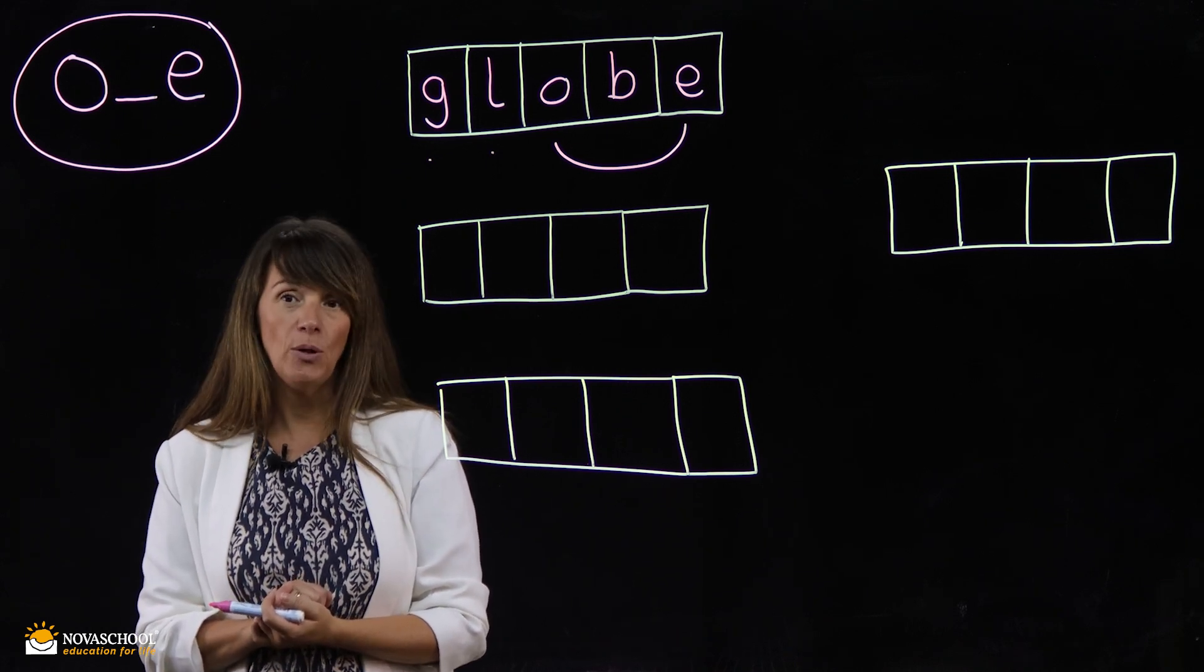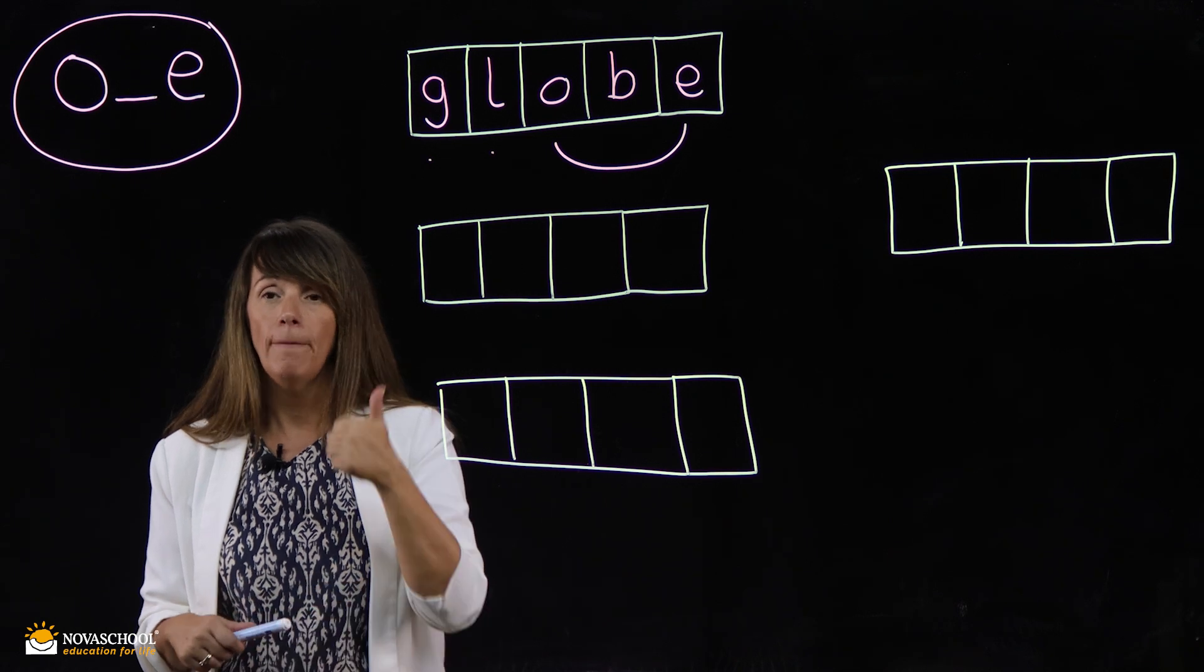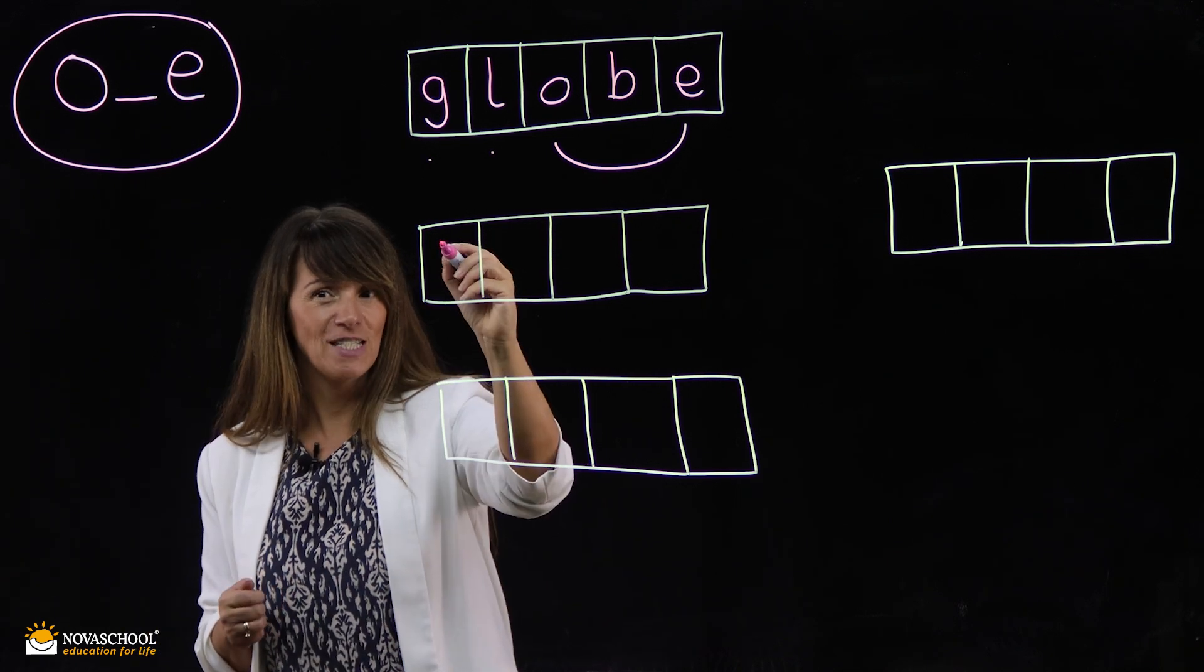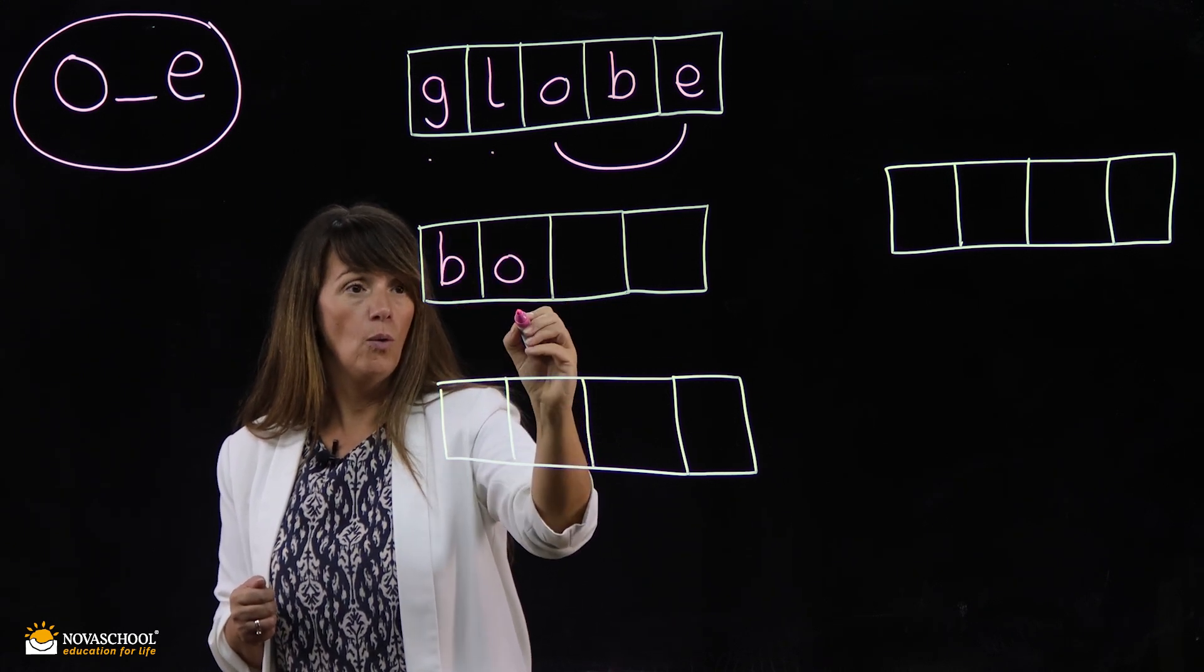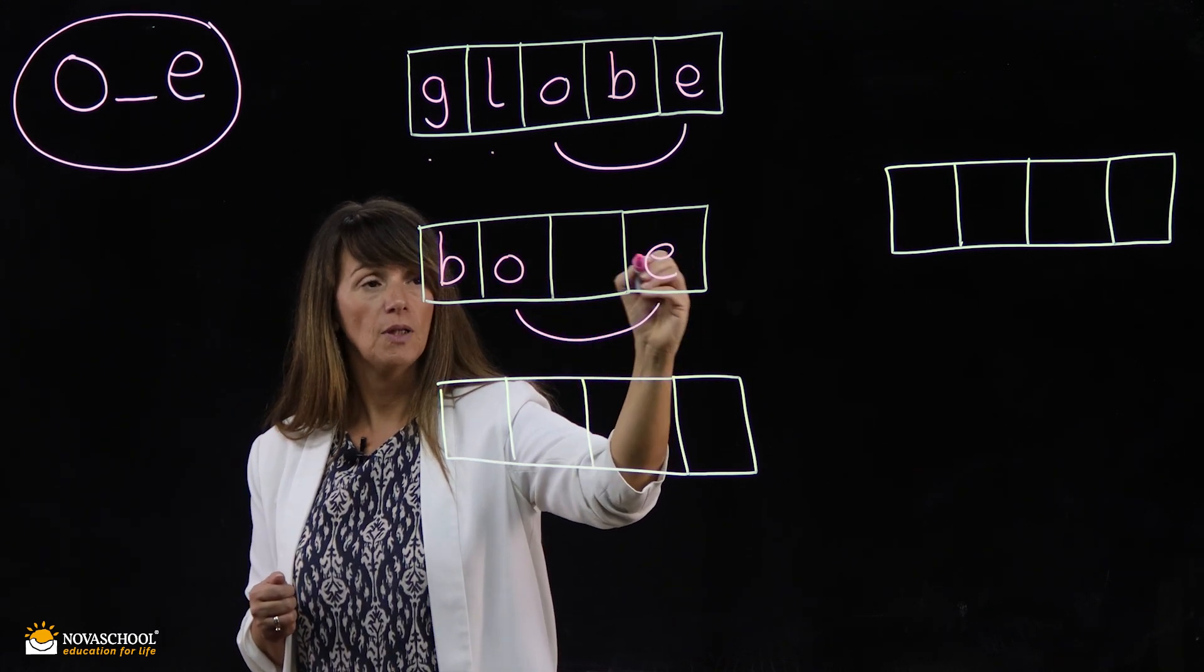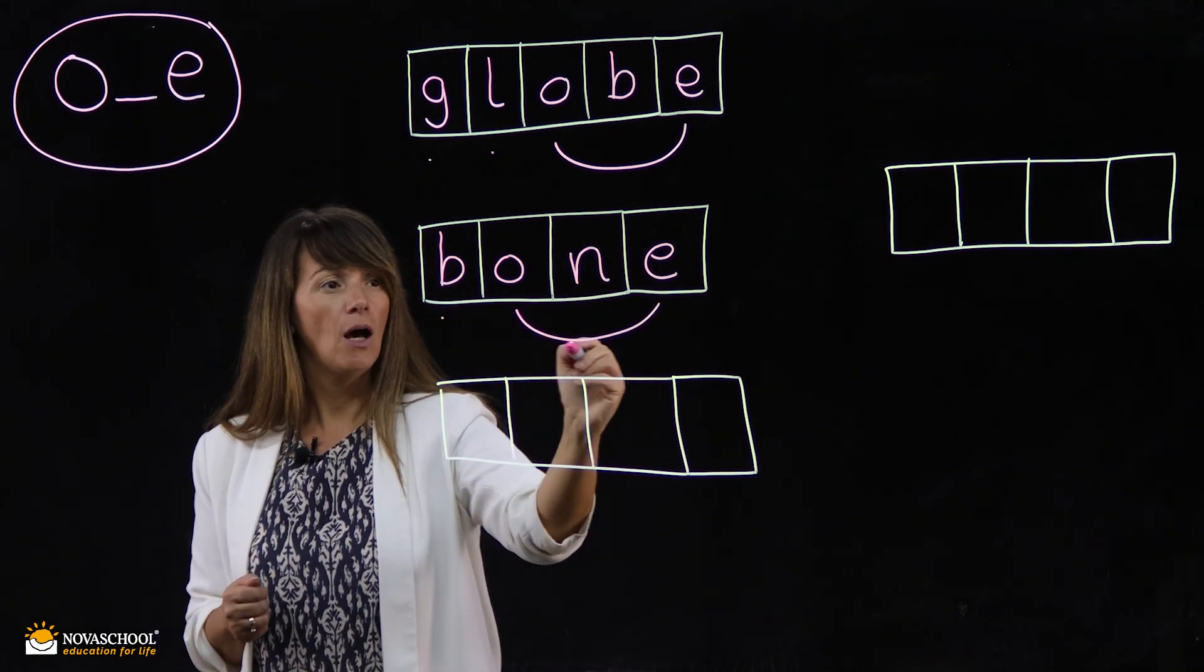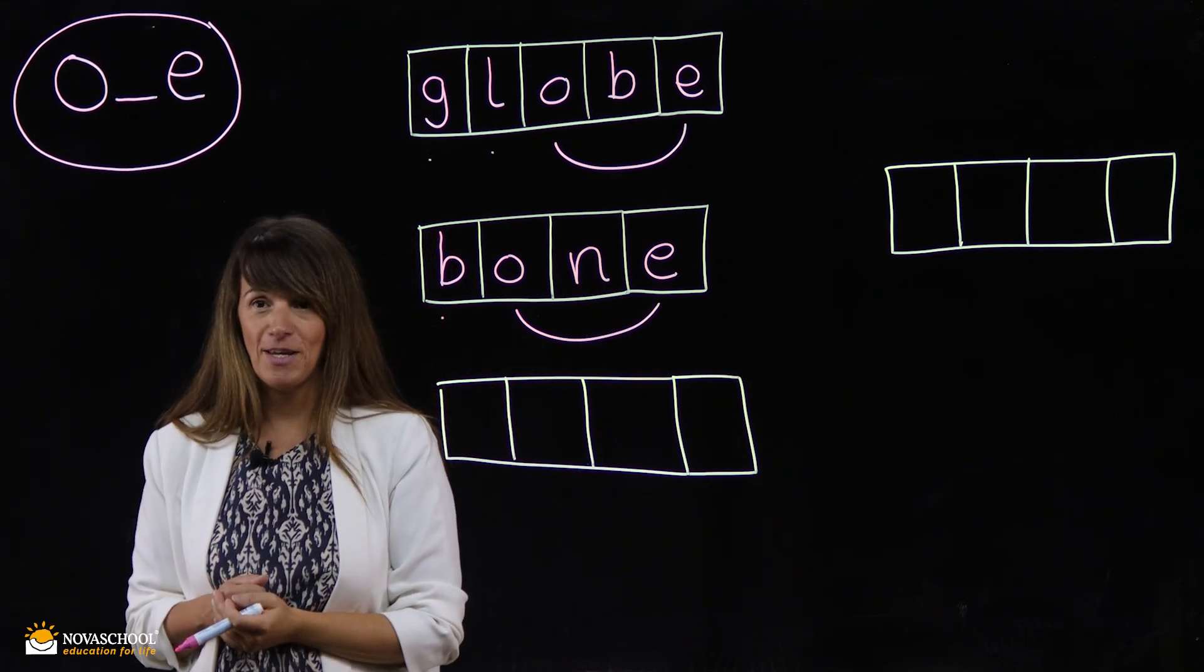Let's do the word bone. Okay, how many sounds can you hear in bone? B, O, N. Three, but we need four boxes. Let's do it together. You ready? B, O, N. Did you know that one? Very good. B, O, N. Bone. Very good.